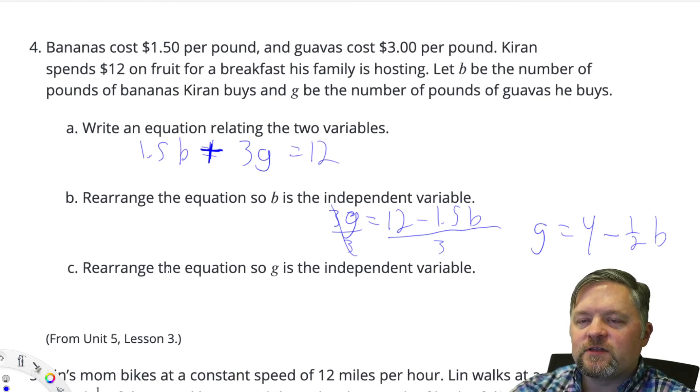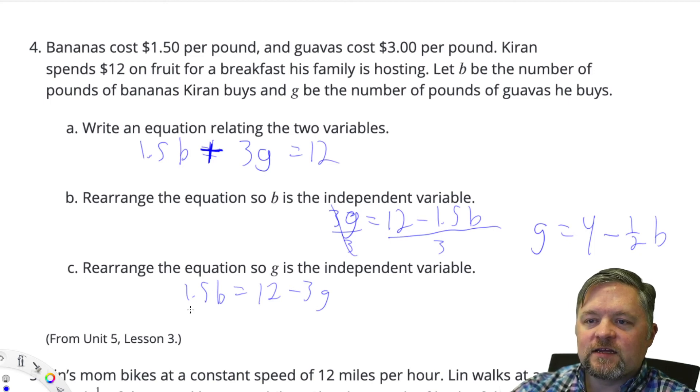Now let's do it the other way, where g is the independent variable, so we want b equals something. If I want b to equal something, I've got to get rid of this 3g, so I'll subtract it from here, which means I have to subtract it from the other side. 1.5b equals, because the 3g went away, 12 subtract 3g.